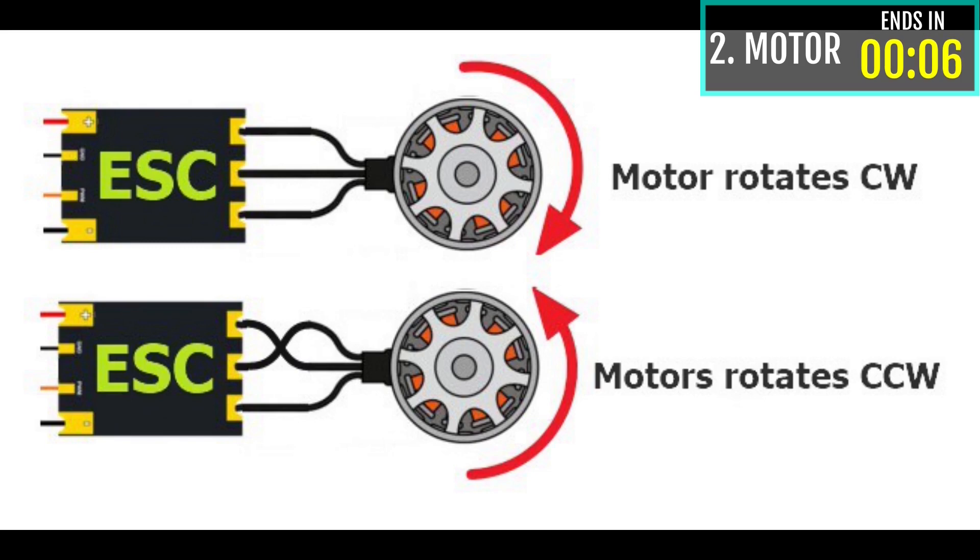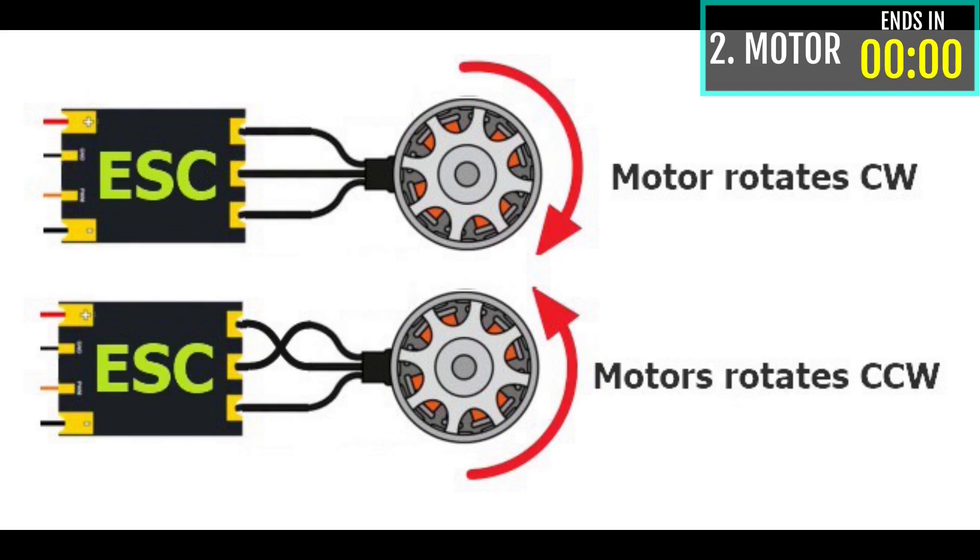If any motor is spinning the opposite direction, just interchange any two wires and then the motor will be spinning in the correct direction. After the soldering is done, this is how you should connect the ESC wires to CC3D and to the receiver.